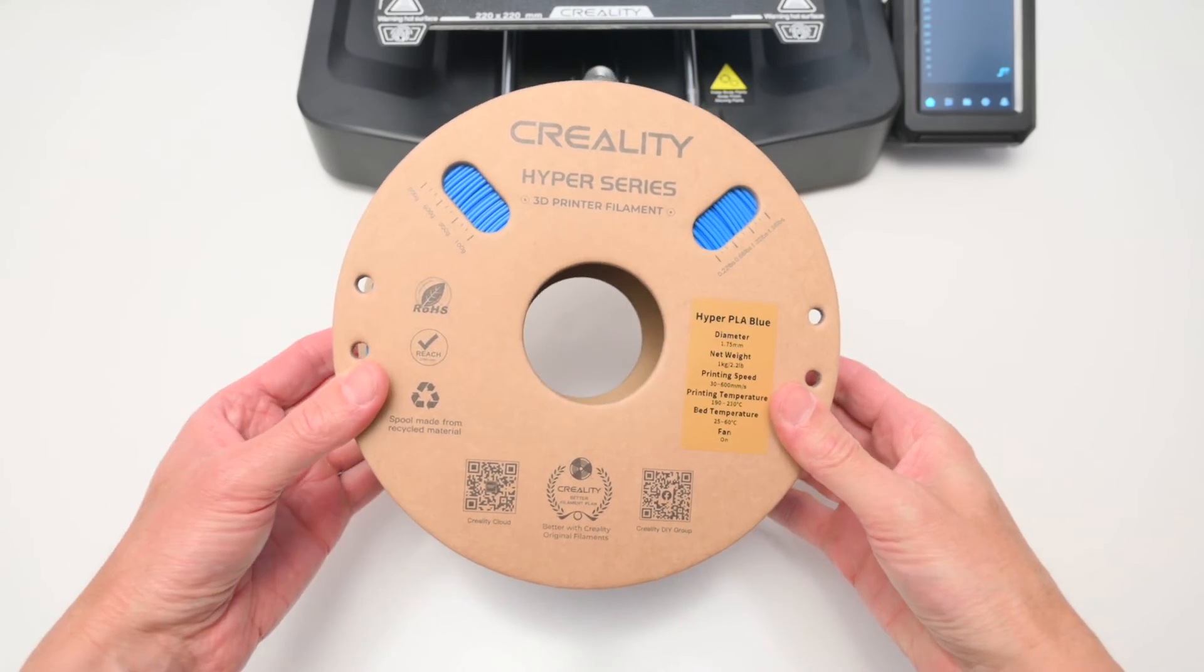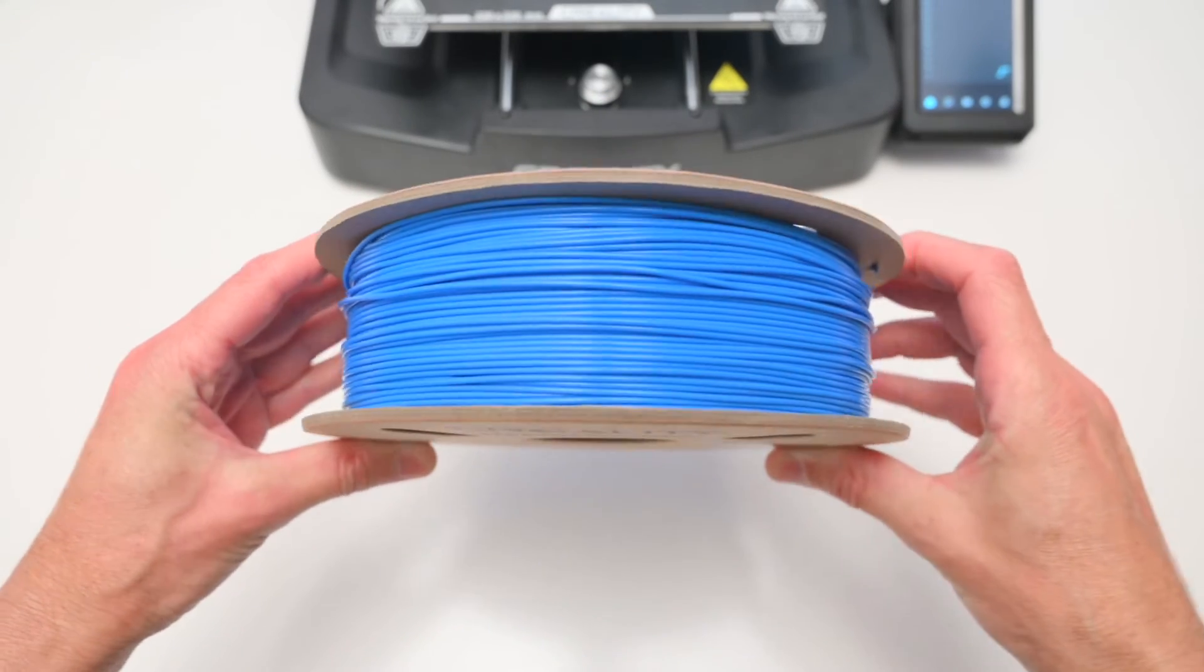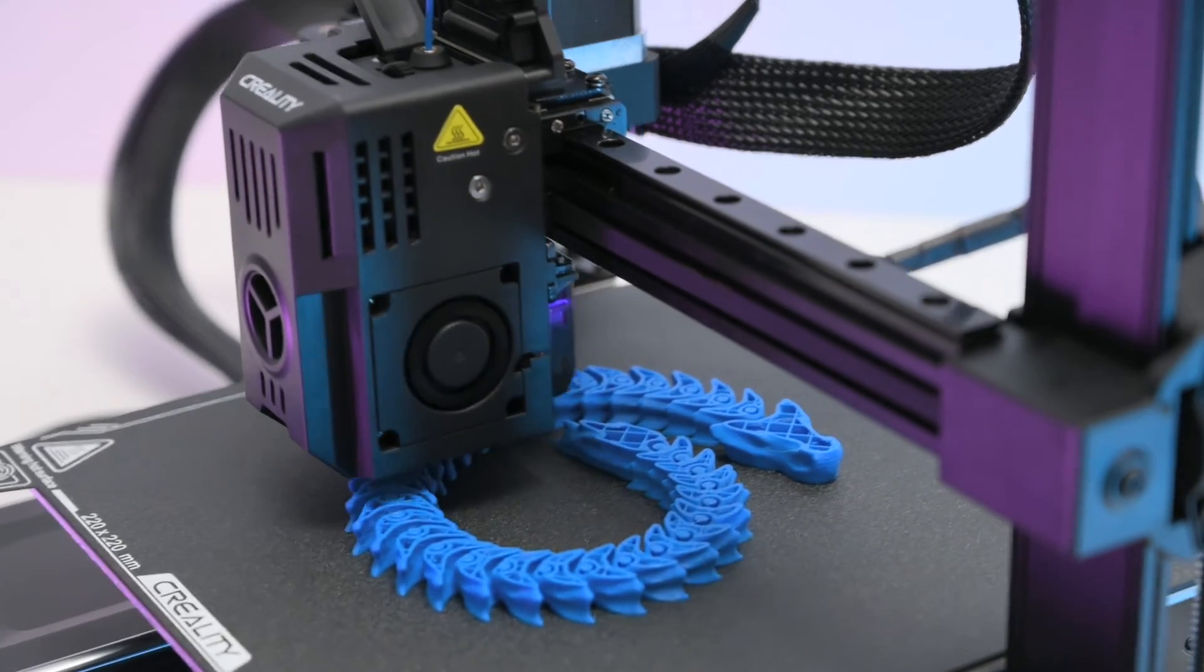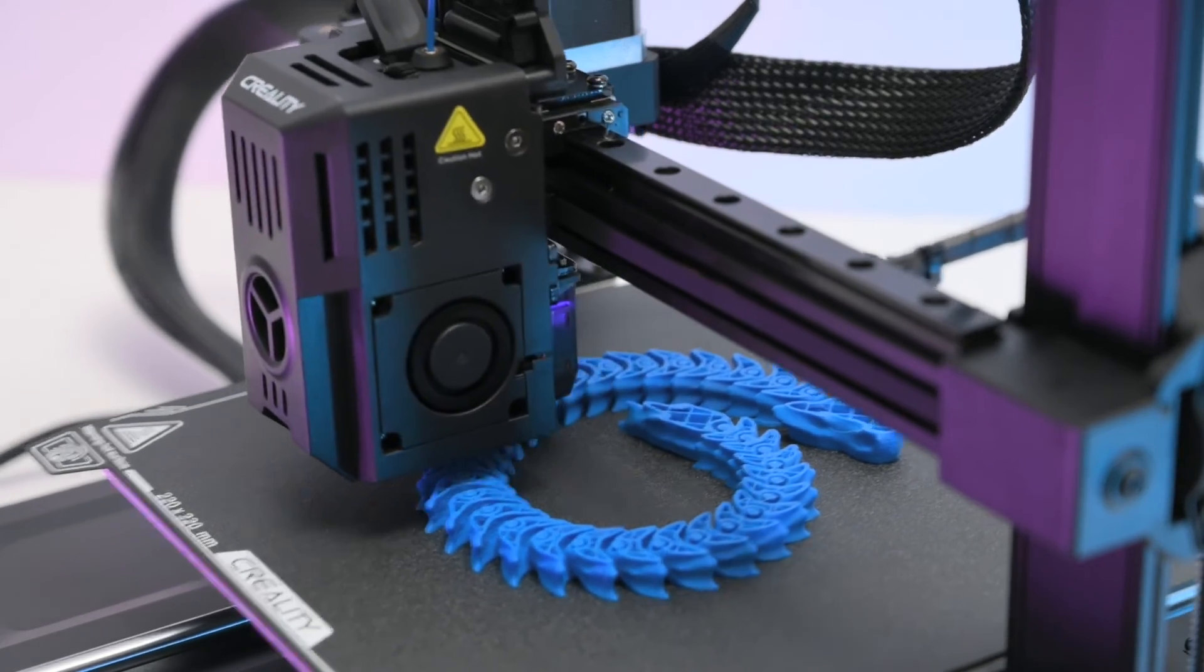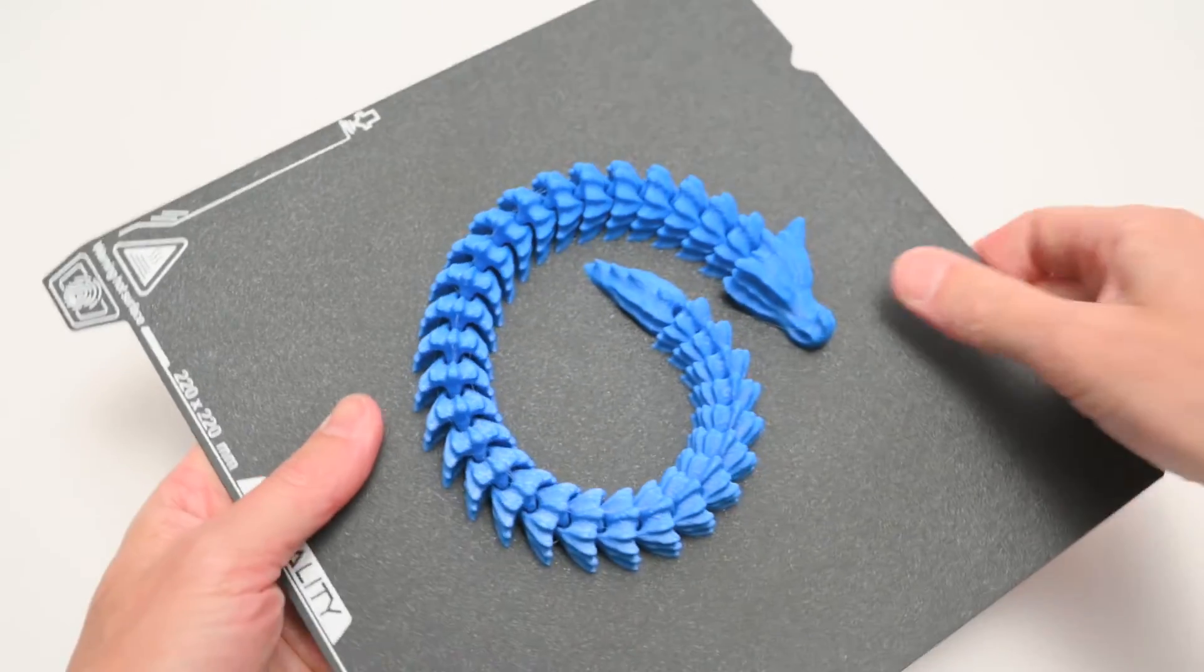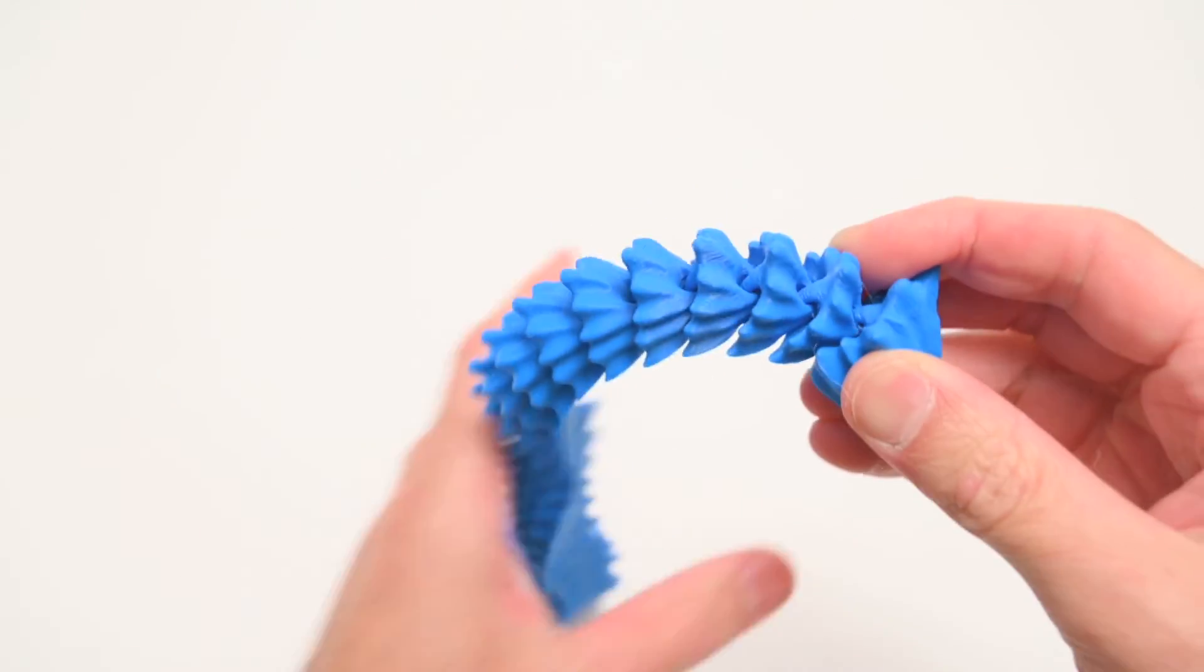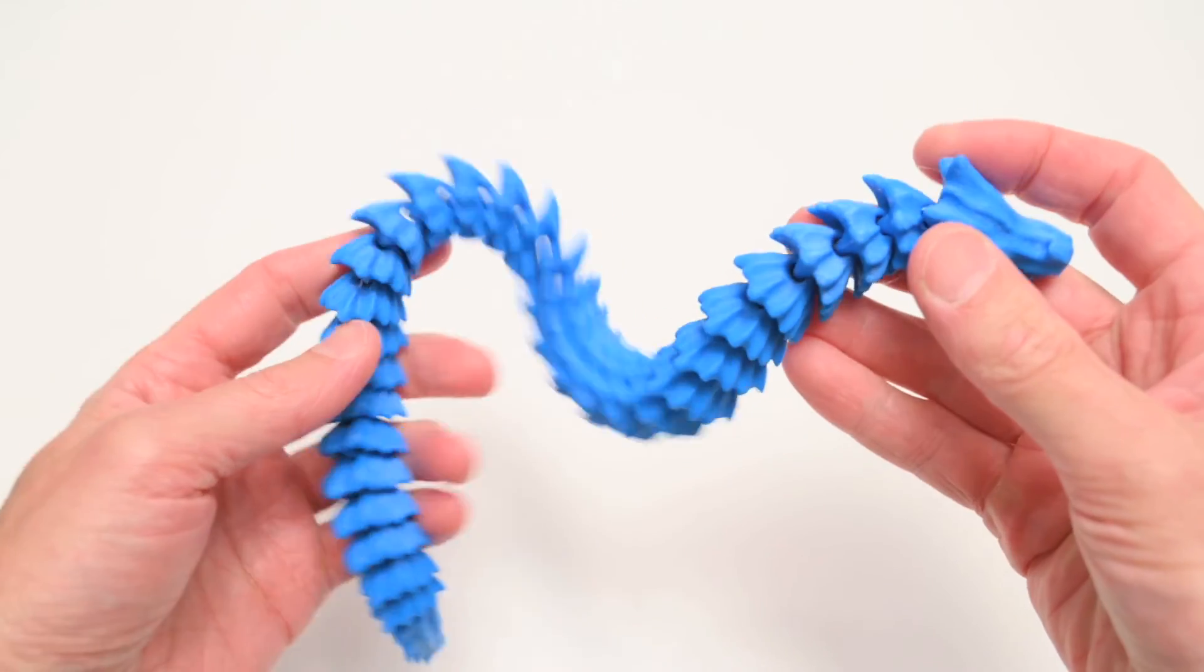For more prints we'll be using the blue Hyper PLA filament. The Hyper PLA is designed for high speed precision printing with fast cooling. This articulating bone dragon has individual pieces that are linked together while printing. Once the printed part is complete, a light flex for the PEI build plate allows the model to be removed effortlessly. This print took around 3 and a half hours and the final result looks great and works as intended.